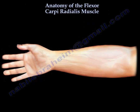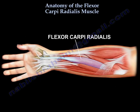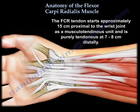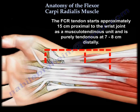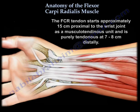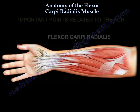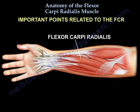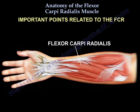The tendon starts approximately 15 cm proximal to the wrist joint as a musculotendinous unit and is purely tendinous at 7 to 8 cm distally. Here are important points related to the flexor carpi radialis.